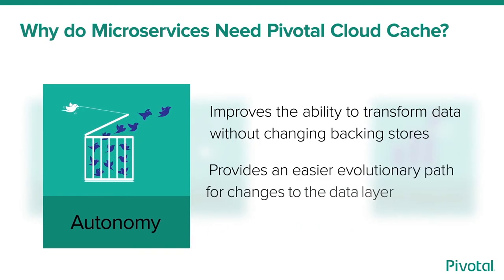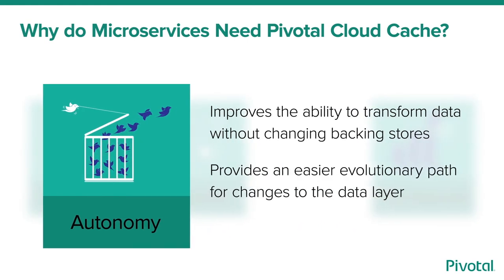Minimizing team interdependence leads to faster software delivery cycles. Pivotal Cloud Cache encourages the use of best practices for increasing team autonomy. Teams can consume data based on their desired view of the data, adding flexibility with how team-specific requirements can be satisfied without adding complexity.